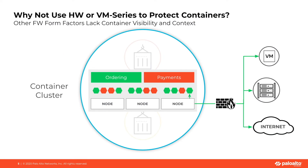If you imagine that the circle in this diagram is a Kubernetes cluster, we have applications — in this case ordering and payments — running on pods, which are represented as hexagons, that are running on nodes, which sit either on bare metal servers or in the public cloud. Now, the default reaction to securing a cluster like this might be to put a hardware or virtual firewall outside of the cluster.